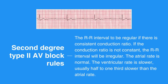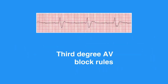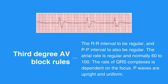Third degree AV block, or complete heart block, rules include R-R interval to be regular and P-P interval to also be regular. The atrial rate is regular and normally 60 to 100. The rate of QRS complexes is dependent on the focus — if the focus is ventricular, the rate will be 20 to 40; if the focus is junctional, the rate will be 40 to 60. P waves are upright and uniform. There is not a QRS following every P wave. The PR interval can only be measured on conducted beats and is usually constant across the strip. It may or may not be longer than a normal PR interval of 0.12 seconds. The QRS complex interval may be normal but is more likely to be prolonged.